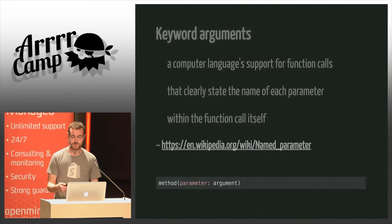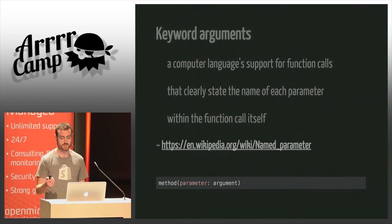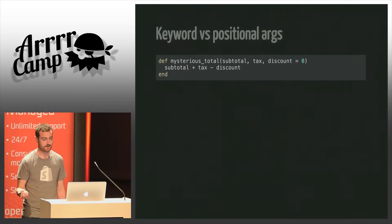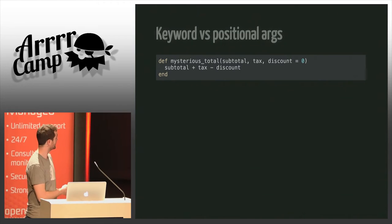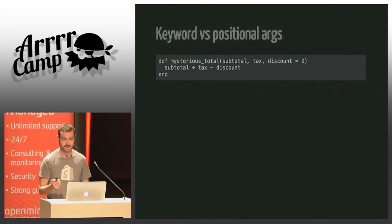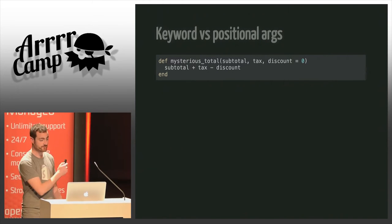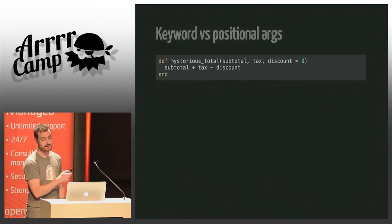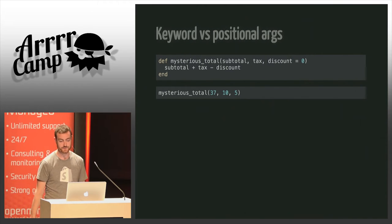Let's first look at the advantages this brings over regular parameters. If we define a method in Ruby, we give it an ordered list of parameters, and it means that when we call the method, the position of the arguments will matter — which is also why we call them positional arguments.